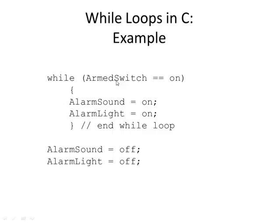If the armed switch is on, it falls into the loop, sounds the alarm, turns on the light, comes back up and checks: is the armed switch still on? If it is, it repeats. When the owner comes in and turns off the armed switch, it breaks out of the loop and executes the two statements after the loop. We use indentation as a visual aid, but C uses the curly braces to define the boundaries of the loop — the computer cares about the curly braces.